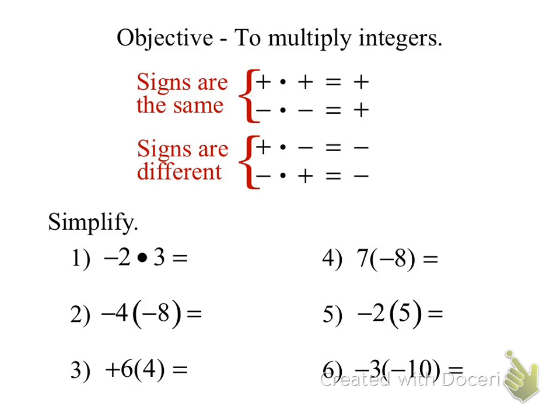All right, so let's do one sample. In number one, are the signs of both those numbers the same or different? They're different. So what's my end result going to be? It's going to be a negative, and then I just multiply the numbers. Two times three is six. So since the signs are different — I have a negative times a positive — I'm going to end up with negative six. Now, are the signs the same on number two? Same. So is the ending answer going to be positive or negative? Positive. So it's going to be a positive, and four times eight is 32. Positive 32.